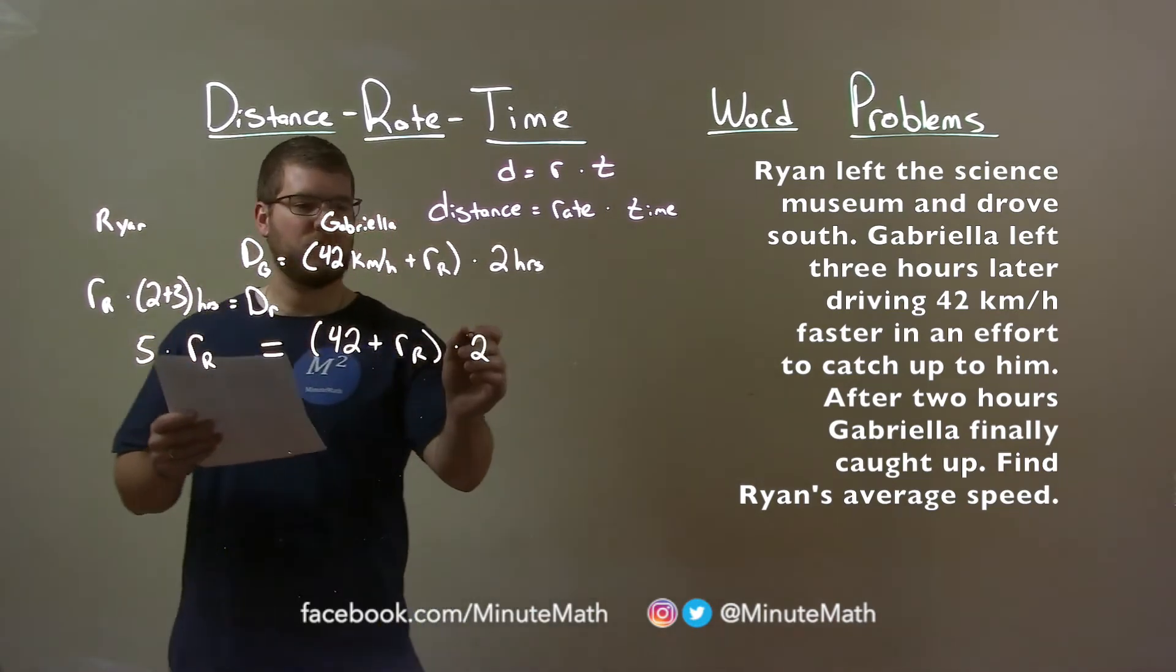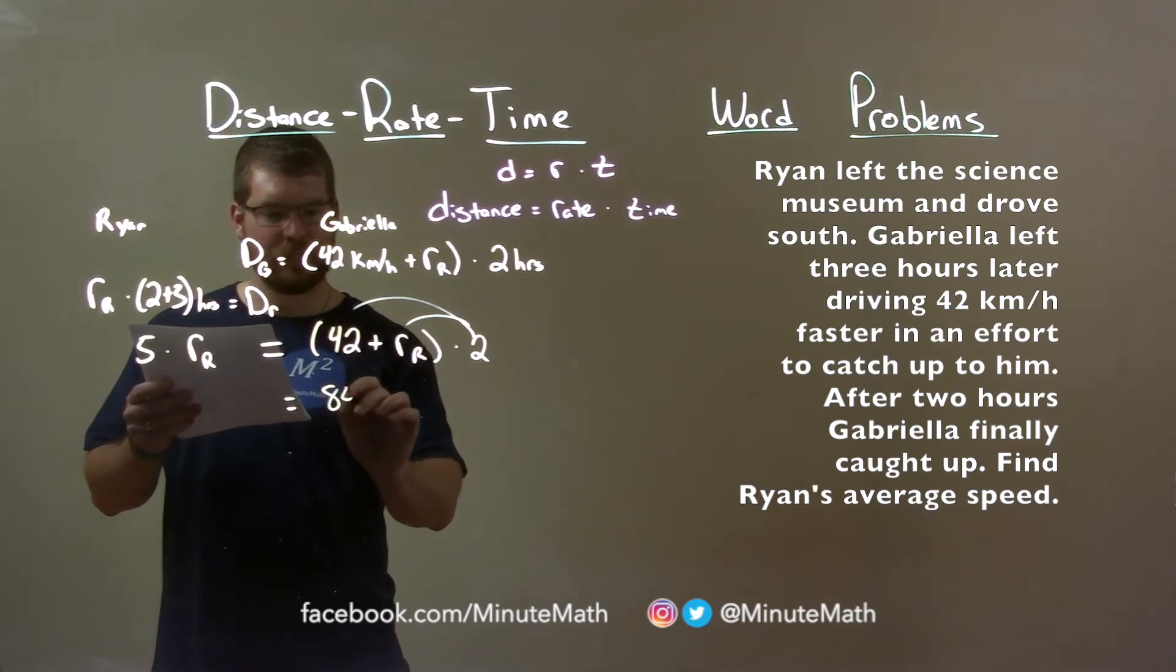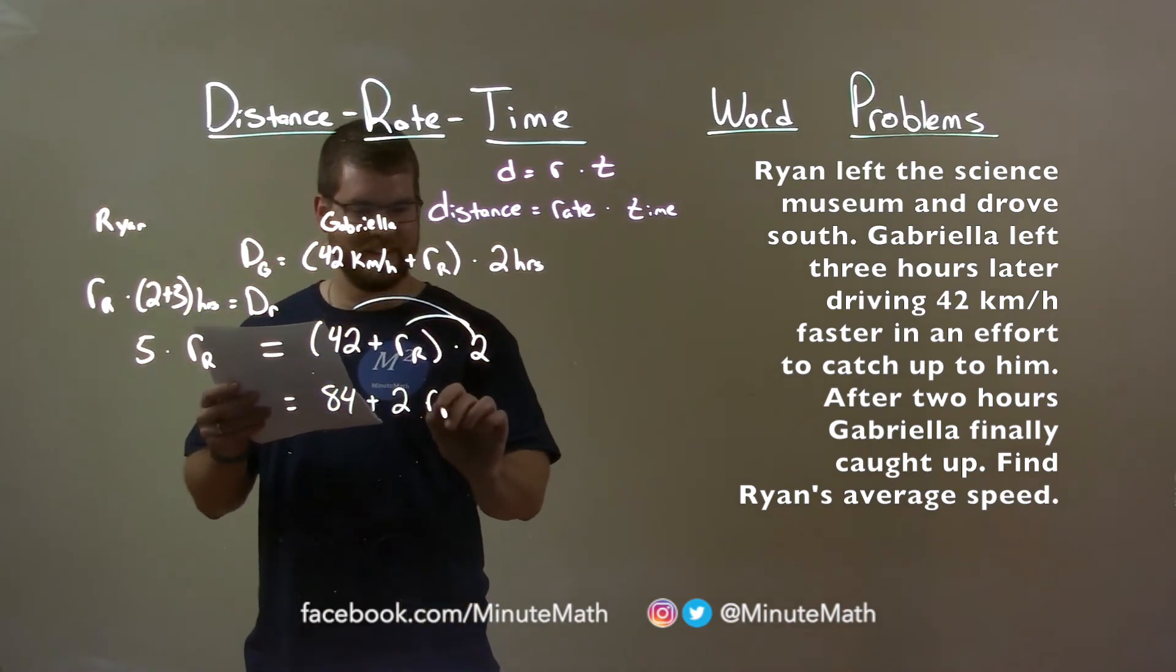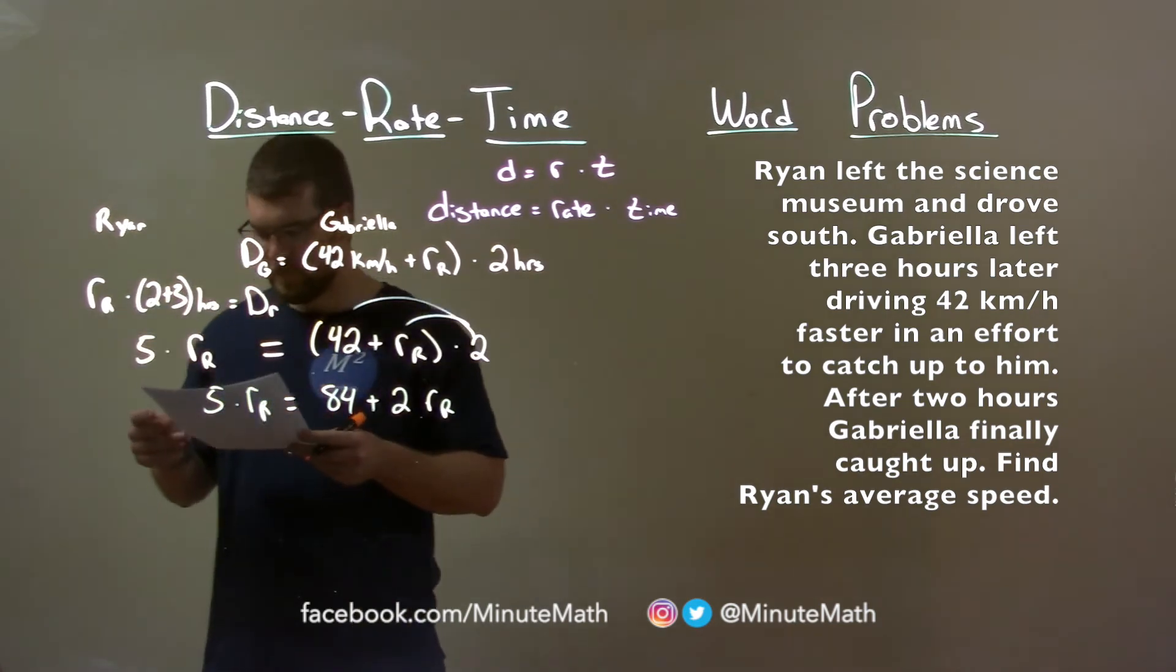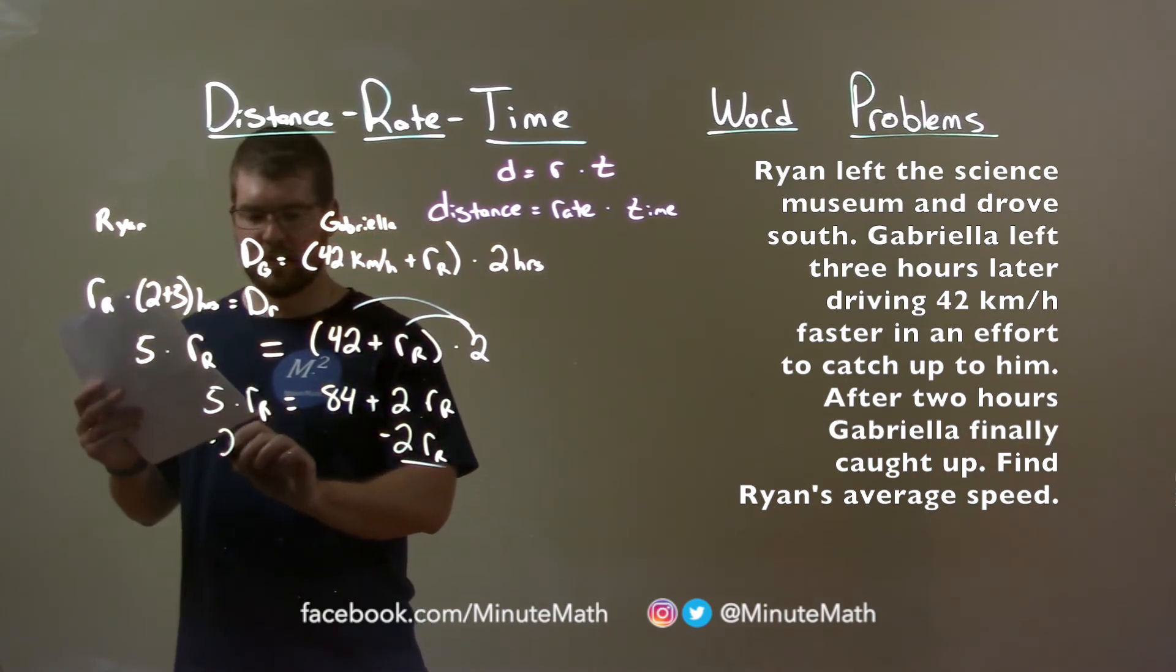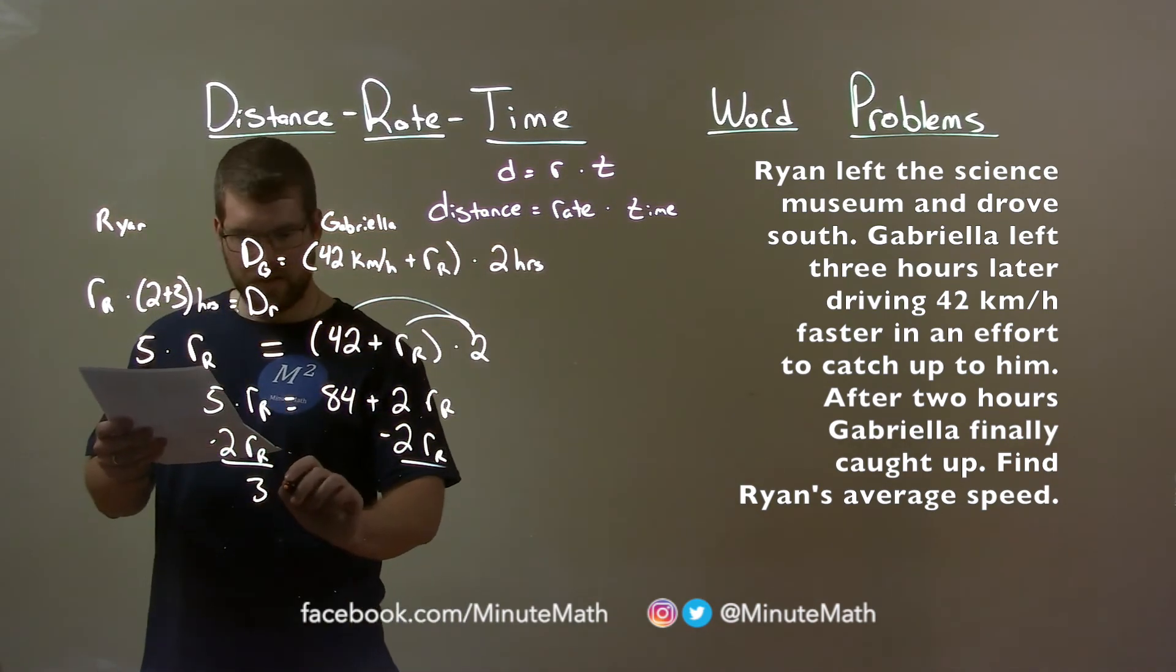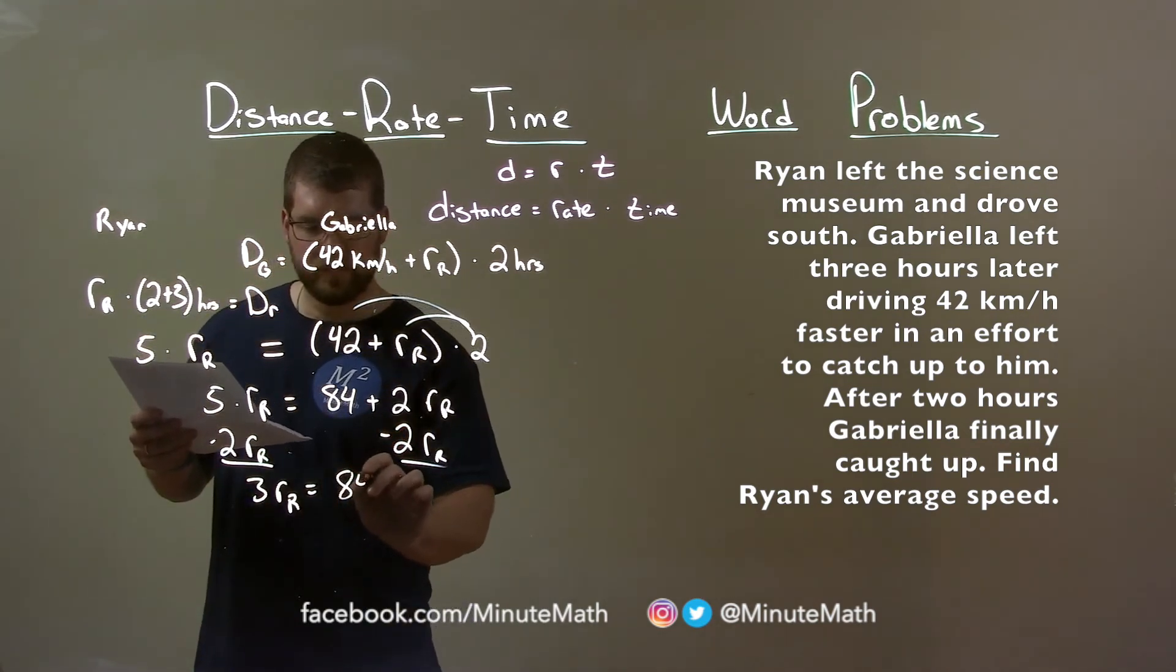Distribute this to both parts. 42 times two is 84, plus two times rr, Ryan's rate, and then we have five times Ryan's rate here. Get our like terms together, we subtract two of Ryan's rates from both sides. Five minus two is three, three Ryan's rates here is equal to 84.